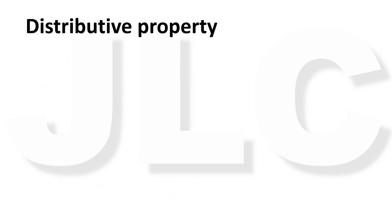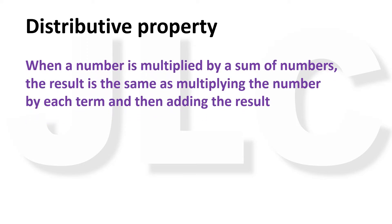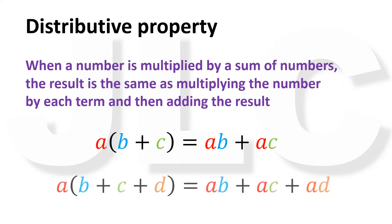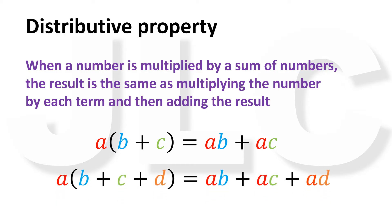A not so intuitive property of real numbers is the distributive property. When we multiply a number by a sum of numbers, we get the same result as multiplying the number by each term and then adding the results. A times the sum of B and C is equal to the product of A and B plus the product of A and C. A times the sum of B, C, and D is the same as AB plus AC plus AD. Multiplication is distributed among the terms of the sum.